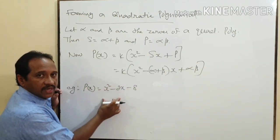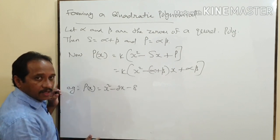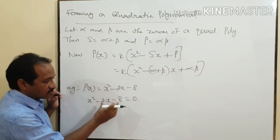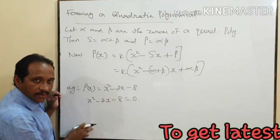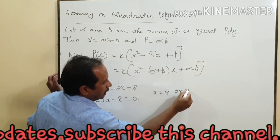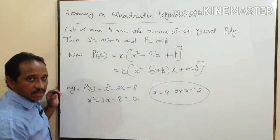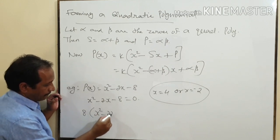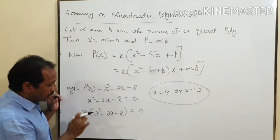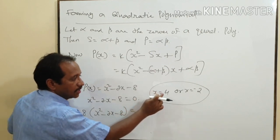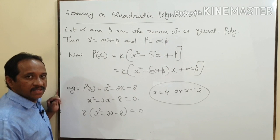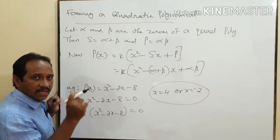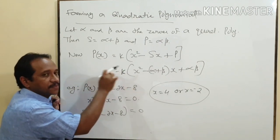For example, in the previous example the polynomial was x² − 2x − 8, with zeros x = 4 and x = −2. If you multiply this polynomial by any real number, say 8, the zeros remain x = 4 and x = −2. That is why for a polynomial there can be any value in place of k. Whenever you form a quadratic polynomial, provide for any real number represented by k.